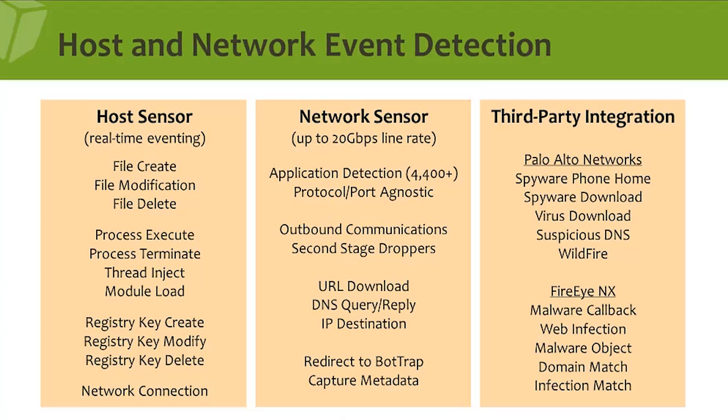Our network sensor can decode protocols — we can detect over 4,400 different protocols. The main goal is to identify outbound connections from infected machines calling out, beaconing, looking for command and control infrastructure, or downloading second-stage droppers and remote access toolkits. By understanding application detection, we can find web traffic tunneled on nonstandard ports, tunneled over Skype, or tunneled over DNS — where a DNS query switches to HTTP.